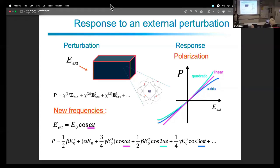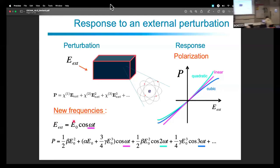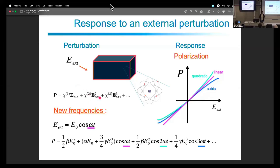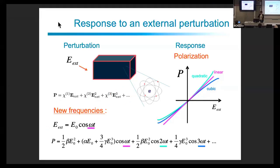The external field inside the material creates the polarization, which depends on the frequency and intensity of the field. At not too high intensities this polarization can be expanded in a series in terms of the electric field. We have several terms: the first is proportional to the external field (linear), the second is proportional to the square (second order response), then third order, and so on.